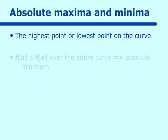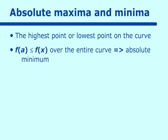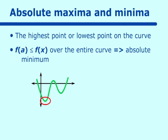What about absolute minimum? This is when the y value is less than or equal to any y value over the entire curve. Same idea as relative, except it is the smallest value. If we have a curve with an interval from A to B, the lowest point on that curve would be your absolute minimum.